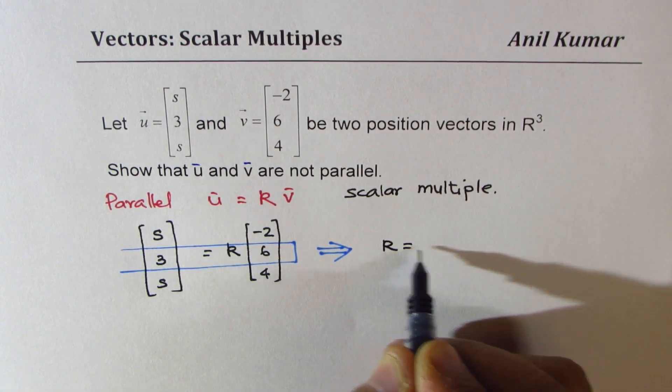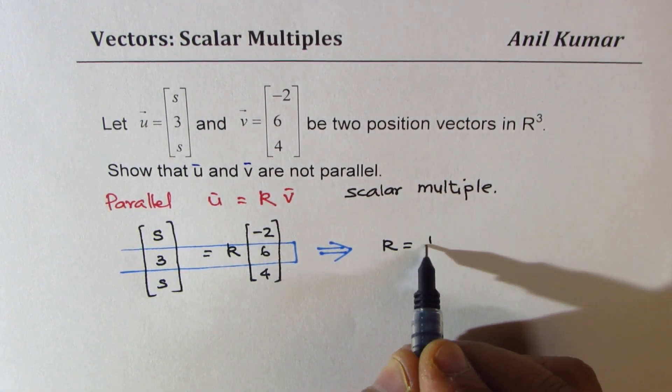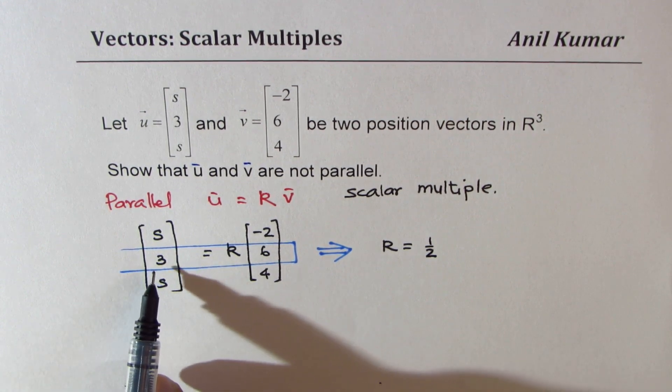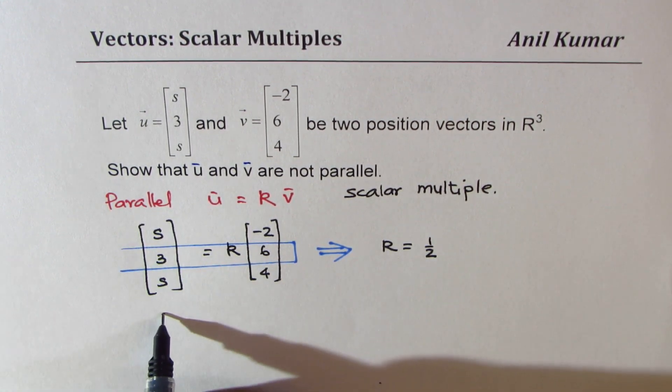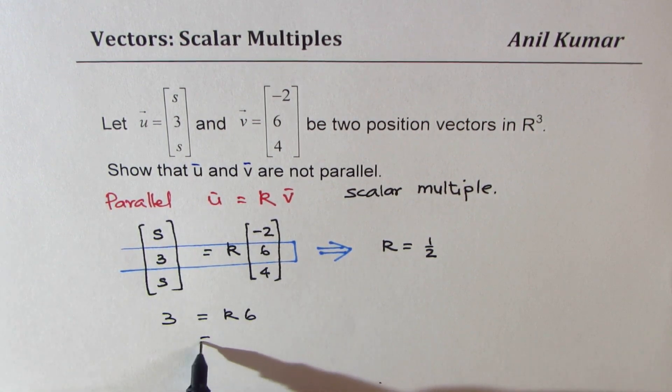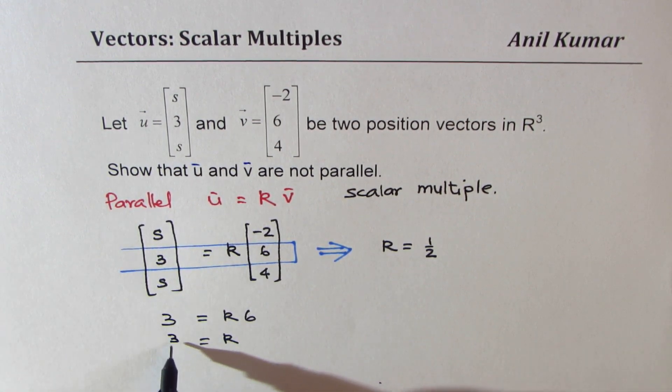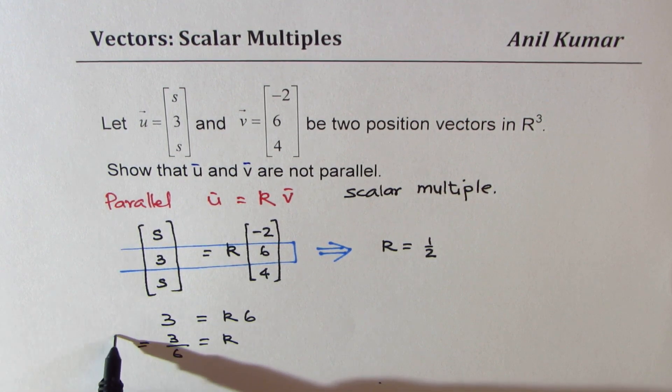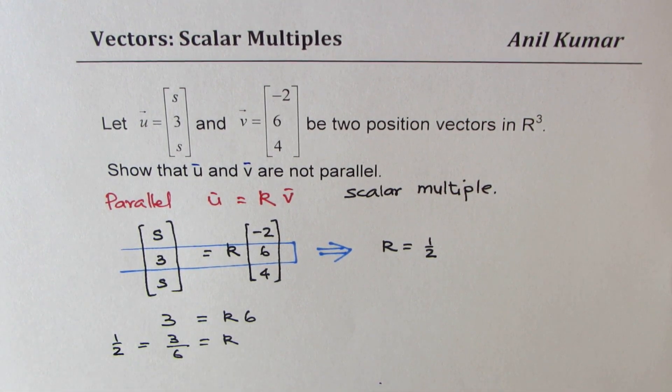So then from the given set of values you can say that k should be equal to half. Since from here we can relate that 3 is equal to k times 6, or k should be equal to 3 divided by 6 which is half.